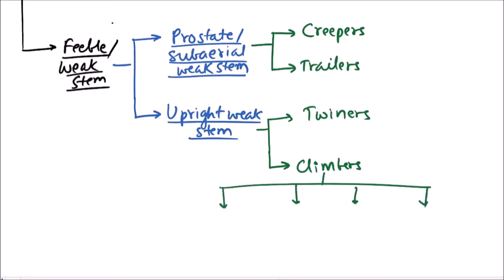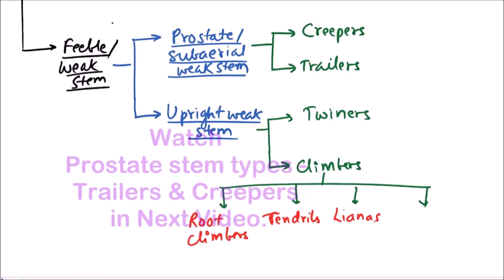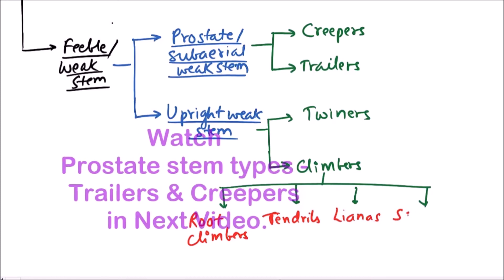First is root climbers, second is tendrils, third is lianas, and fourth one is scramblers.